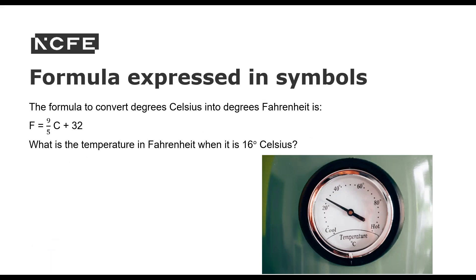Here's another one expressed in symbols. So this formula is to convert degrees Celsius into degrees Fahrenheit. So Fahrenheit equals 9 fifths C plus 32. What is the temperature in Fahrenheit when it is 16 degrees Celsius? So again, we just follow the same steps. Substitute in the value. So we've got F equals 9 fifths times 16 plus 32. And then we follow BIDMAS.